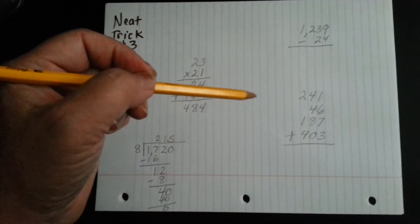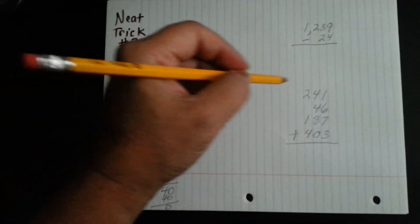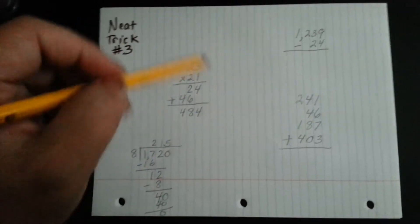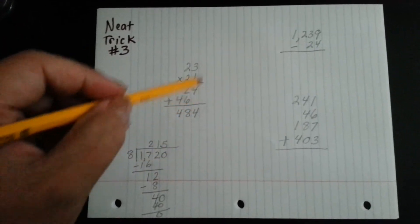One of the biggest mistakes that people make when they're doing math is they don't line their columns up correctly and they end up adding, subtracting, multiplying, or dividing the wrong numbers.